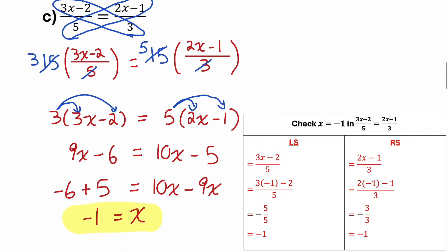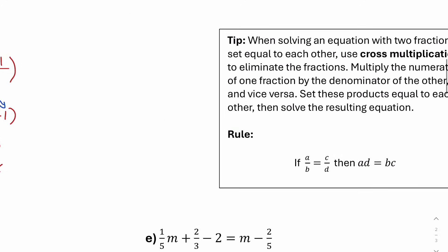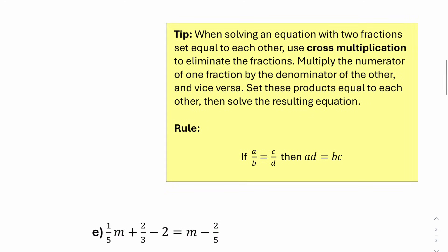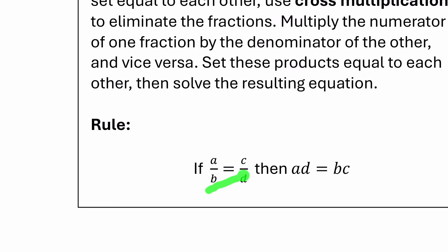You can check that into the original equation to verify left side equals right side. The rule is: when solving an equation with two fractions set equal to each other, we can use cross multiplication to eliminate the fractions. Multiply the numerator of one fraction by the denominator of the other, and vice versa. Set these products equal to each other, then solve. If we have a/b = c/d, then a times d equals b times c.